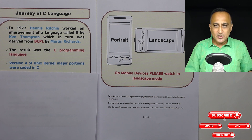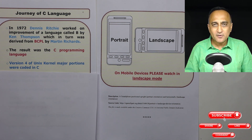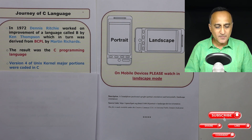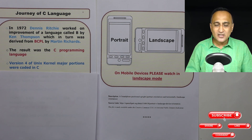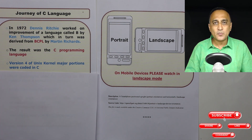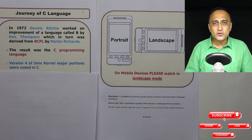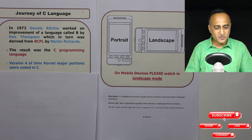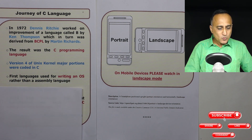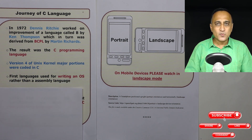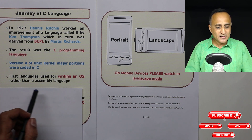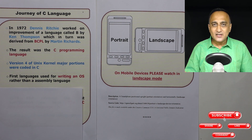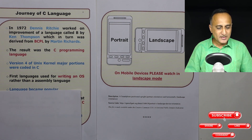The most important aspect of the development of C in those days was writing the internal parts — or the kernel — of the operating system using the newly developed C language, because before that it was mostly assembly language used for writing low-level operating system features. So C was one of the earliest, in fact the first, high-level programming language used in place of assembly language for writing the internal parts of the operating system.